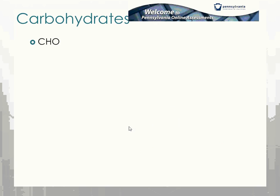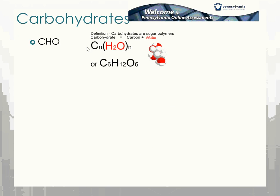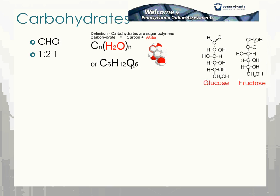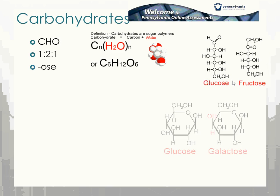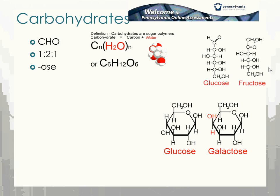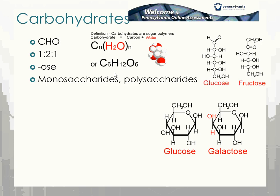Carbohydrates have carbon, hydrogen, and oxygen. The word 'carbohydrate' means carbon and water, so it ends up being a 1:2:1 ratio of those elements. When you're looking at carbohydrates, they end in '-ose': glucose, fructose, sucrose, lactose. They can form either a linear form or a ring, but either way you'd still get that 1:2:1 ratio.